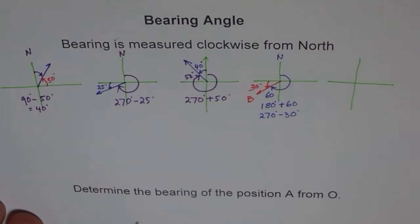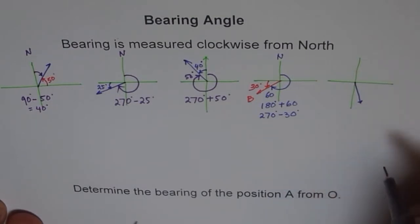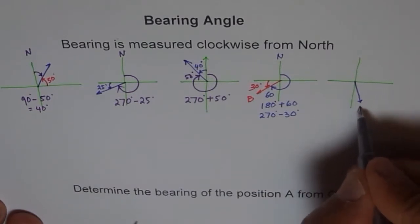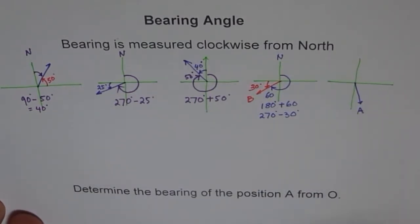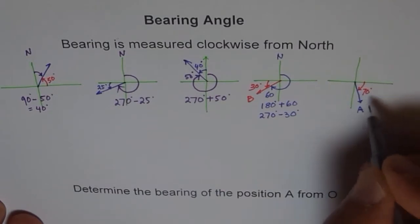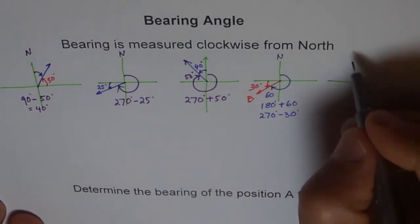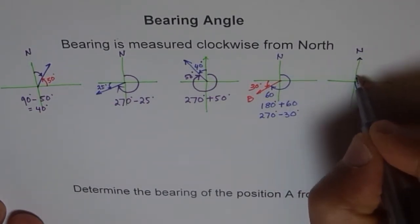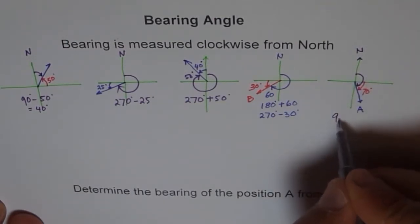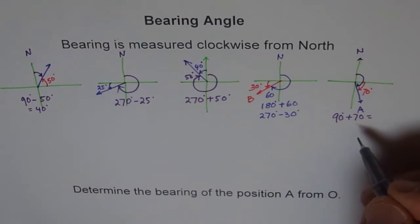Now let me take another example. Let's say we have another boat at position A. You know that from here it is 70 degrees. Then what is the angle of bearing? Angle of bearing is measured from north, so from north we'll measure the angle. It is 90 plus 70 degrees. So 90 degree plus 70 degree is my answer. That's how you find the angle of bearing.